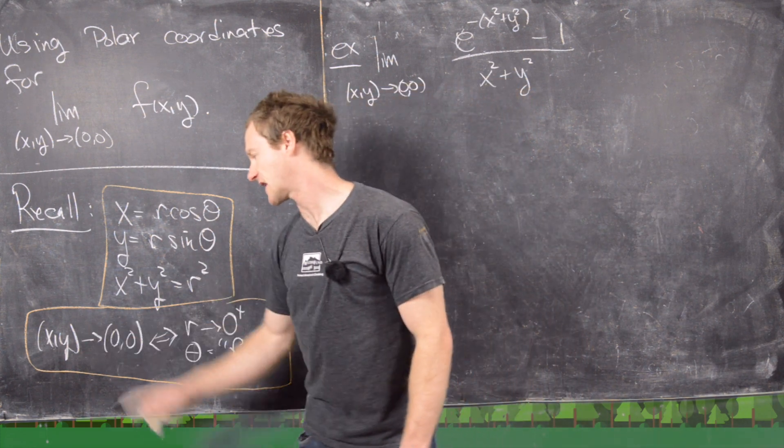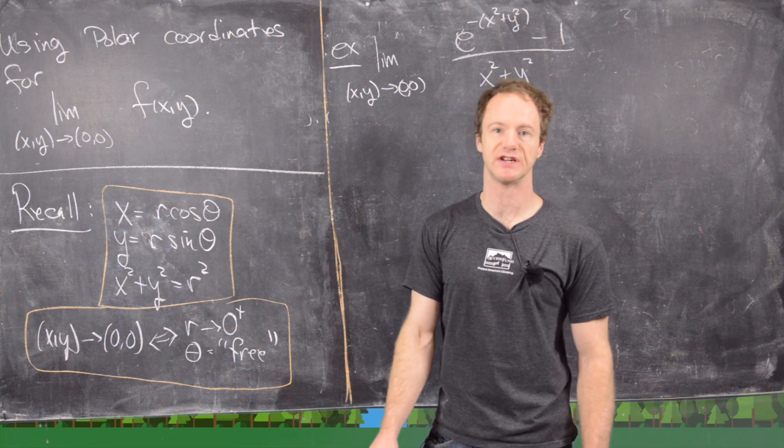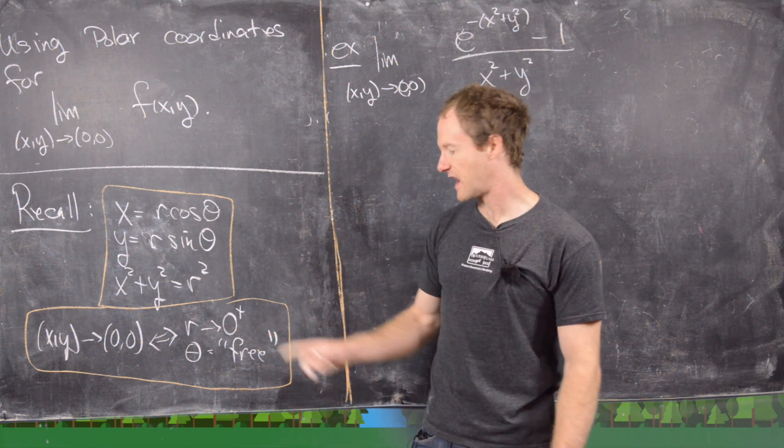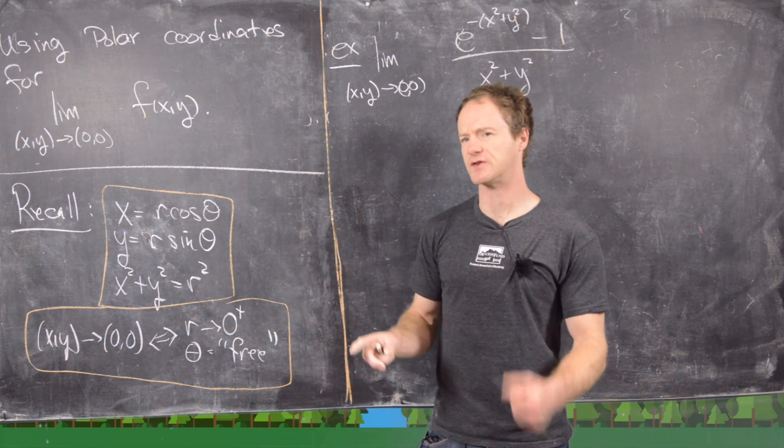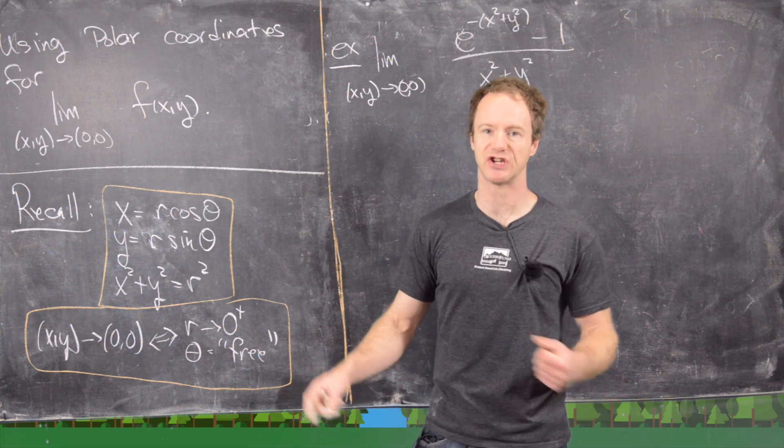If x and y are approaching the origin, that means that r is approaching zero from the right and theta is somewhat of a free variable. Now sometimes you can get into a little bit of a problem with this theta, but generally it's okay.